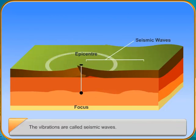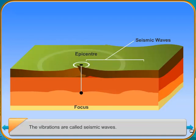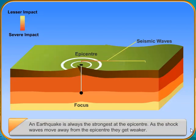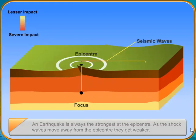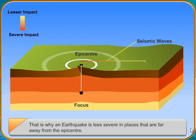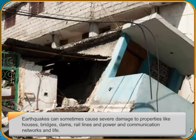Seismologists are experts who study the pattern of earthquakes. The instrument which records the intensity of an earthquake is called a seismograph. The Richter scale, which ranges from 0 to 9, is used to measure the intensity of an earthquake. An earthquake can move as fast as 2 kilometers per second and can unleash as much energy as a one megaton explosion.